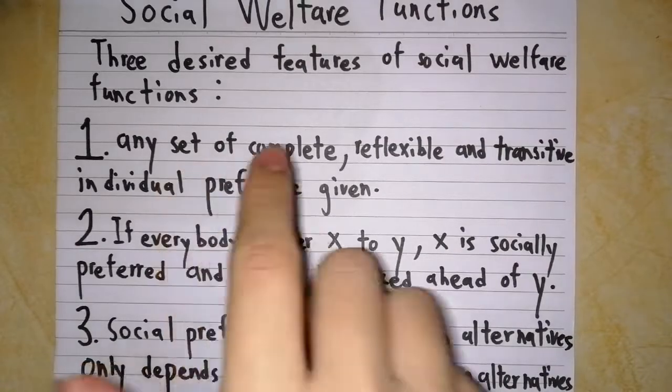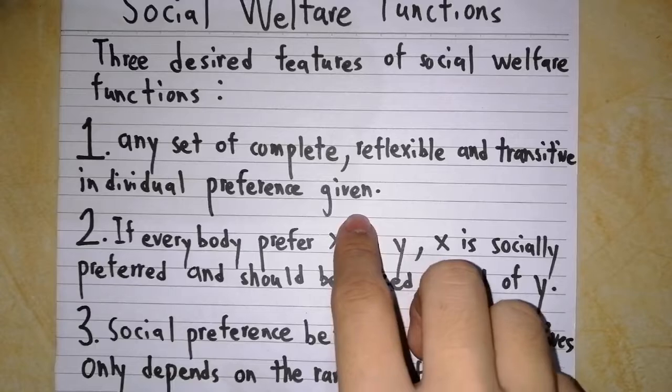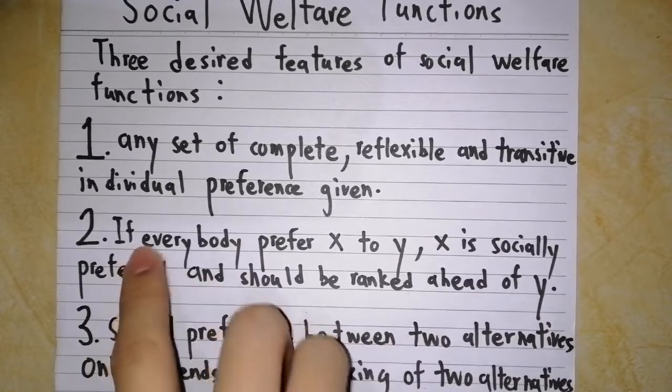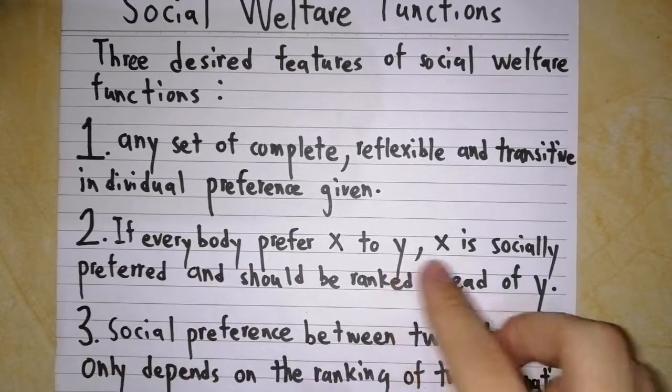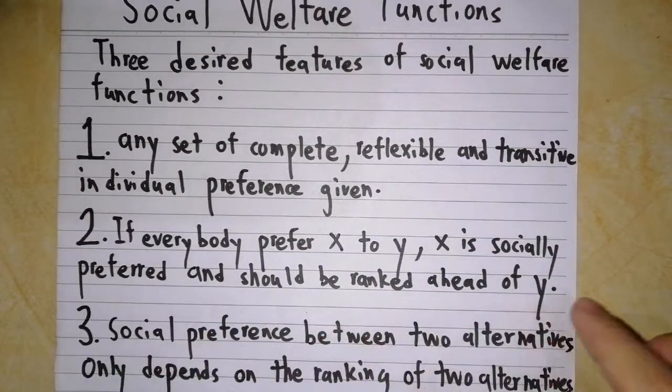The first one is any set of complete, reflexive, and transitive individual preferences are given. The second feature is if everybody prefers X to Y, allocation X is socially preferred and should be ranked ahead of allocation Y.